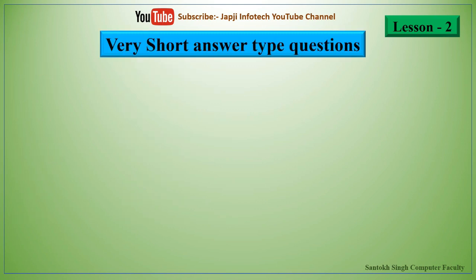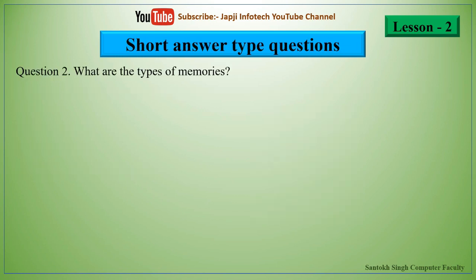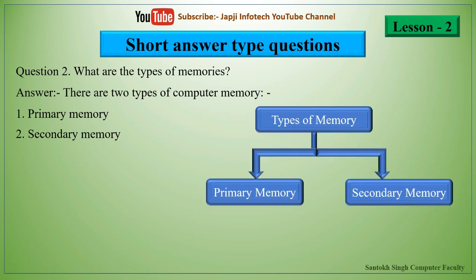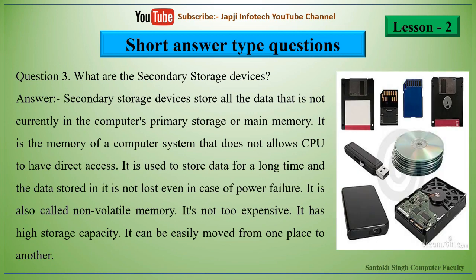We will now learn about very short answer type questions. The first question is: write the name of parts of CPU. The central processing unit is divided into three sections: memory unit, control unit, and arithmetic and logic unit. The second question is: what are the types of memory? There are two types — primary memory and secondary memory. The third question is: what are the secondary storage devices? Secondary storage devices store all data not currently in primary storage or main memory. The CPU does not have direct access to it, and data stored is not lost even in case of power failure.